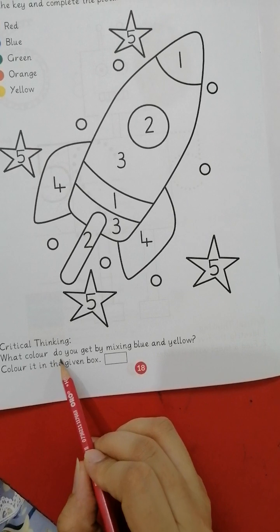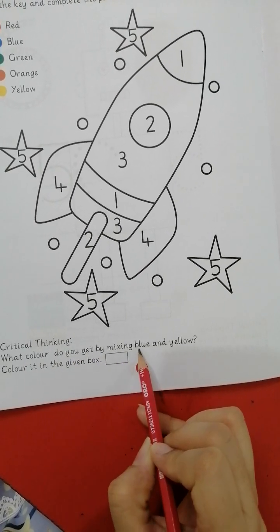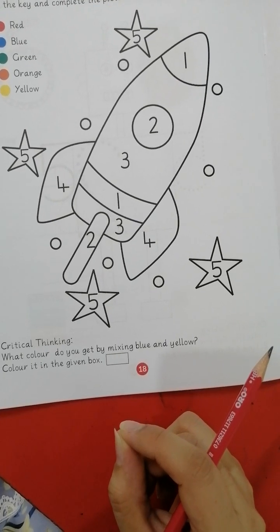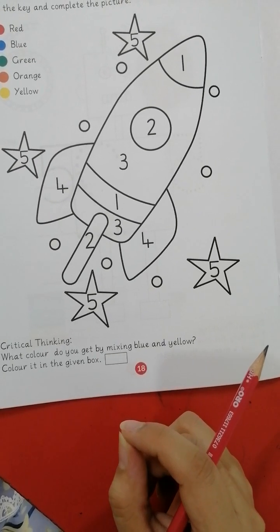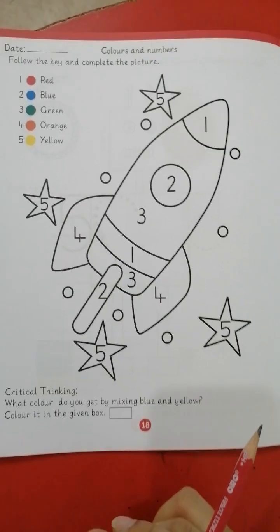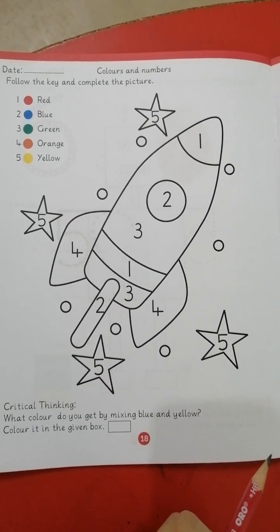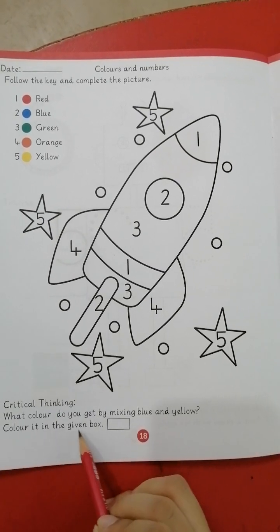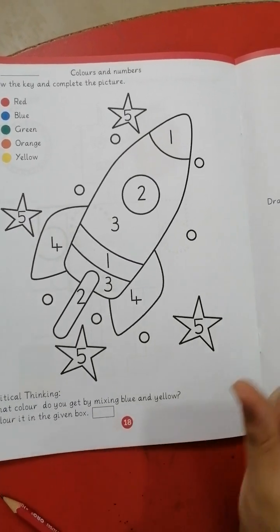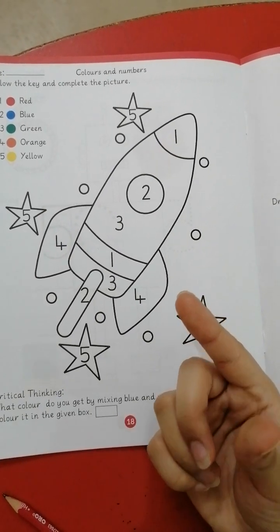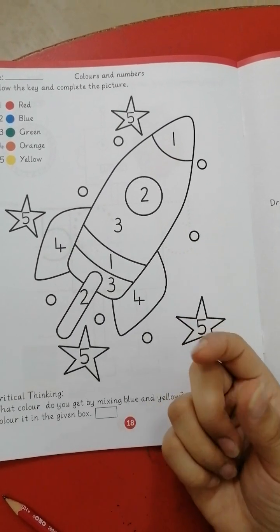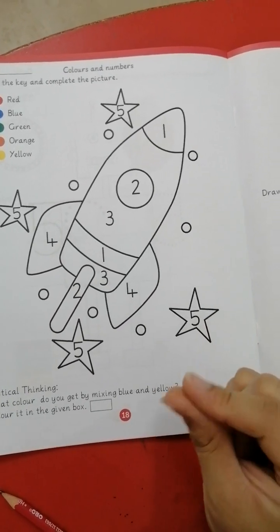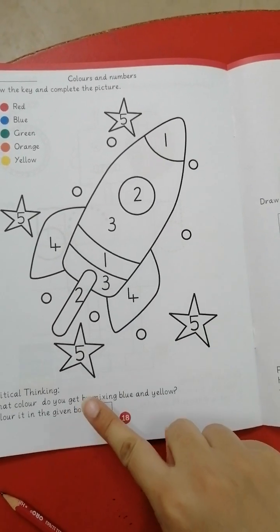Next is what color do you get by mixing blue and yellow? When we mix blue and yellow together, which color do we get? You have to find it. Take paints and color it. Mix it. Then you will get to know. Color it in the given box. Take two paints. On your one finger, do yellow paint. And on the other finger, do blue paint. Then mix it like this and paste it over here.